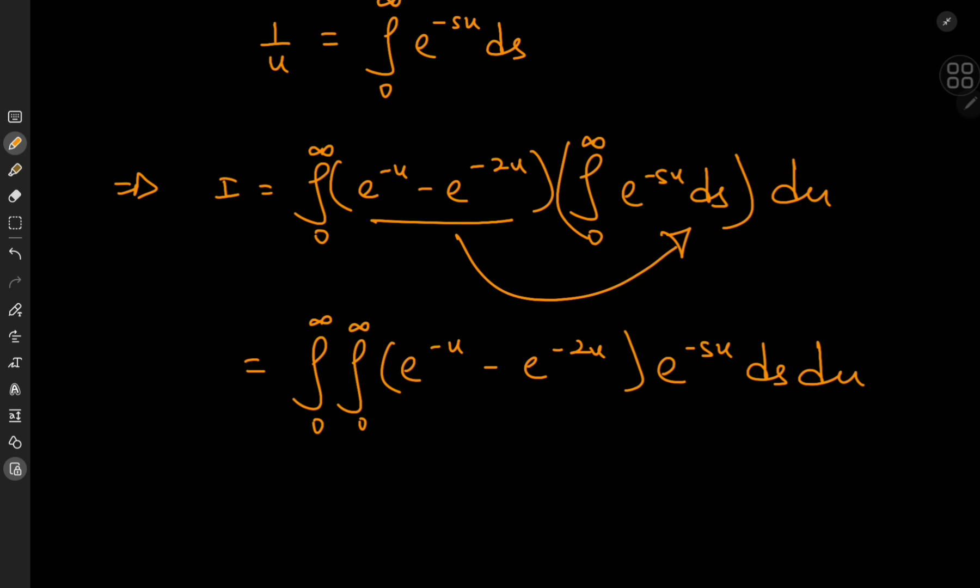And because all I have here are exponential functions with negative arguments, there are no problems regarding continuity or boundedness and convergence. So that means I can switch up the order of integrations here and integrate first with respect to u and then with respect to s.